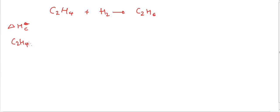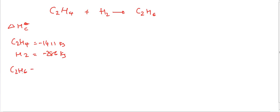The burning of ethene will release 1,411 kilojoules per mole of energy. You've got the same data for hydrogen, so the combustion of hydrogen will release 286 kilojoules of energy, and you've got the combustion of ethane.